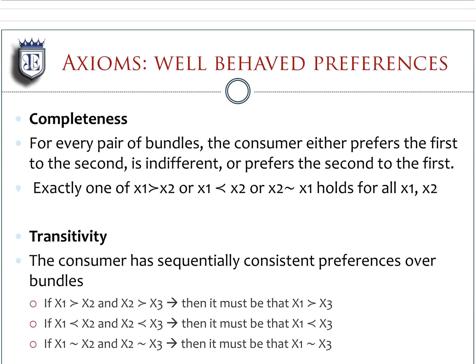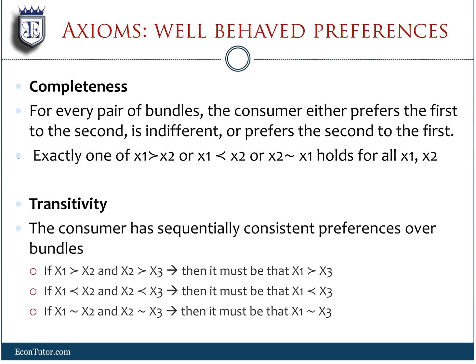The first axiom in detail is completeness. What completeness means is that people are able to rank bundles. So you can say that you like good x1 more than good x2, or you like x2 more than x1, or you're indifferent. There's no third possibility in this case, so you have this completeness in the way preferences are ranked.